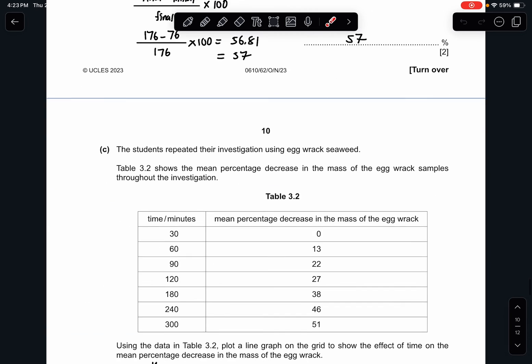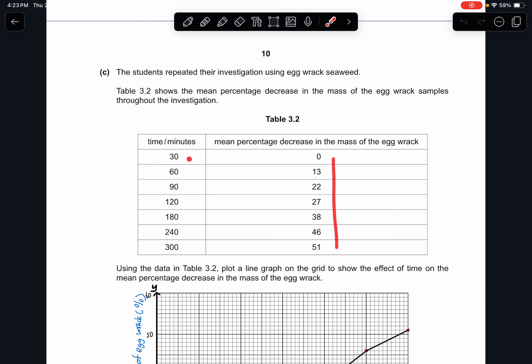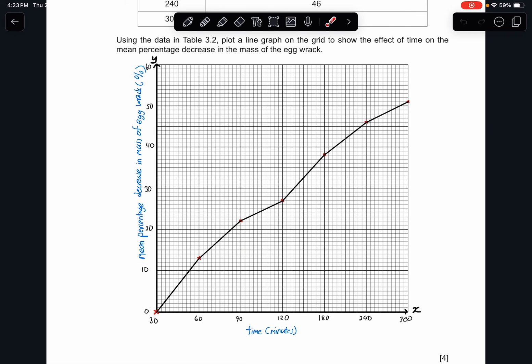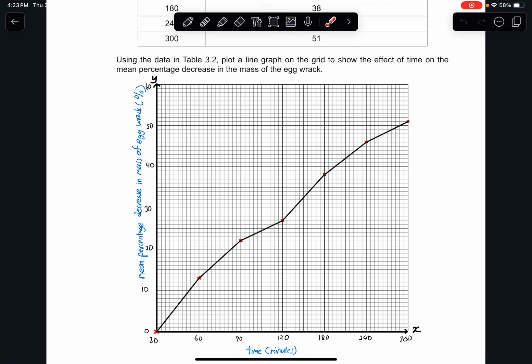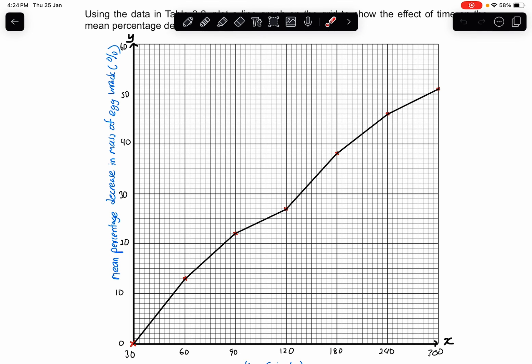Part C. The students repeated the investigation using egg wrack seaweed. Table 3.2 shows the mean percentage decrease in the mass of the egg wrack sample throughout the investigation. They give you this data and ask to plot a line graph. When they say a line graph, you can either draw a line graph which is connected from one plot to another, or you can draw a line of best fit. But usually for biographs, it's better to draw with connected plots. This is how it looks like. It's a very simple graph. Just interpret your values into this and then how you're going to get your marks by your axis being written and a suitable line and then correct data and correct values placed on the axis and then the plots must be smaller, not too big. This is how the graph will look like as your reference.